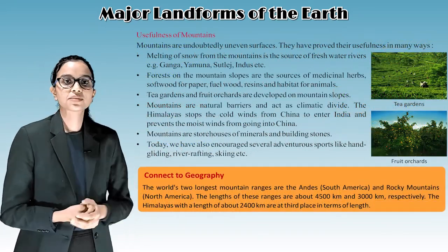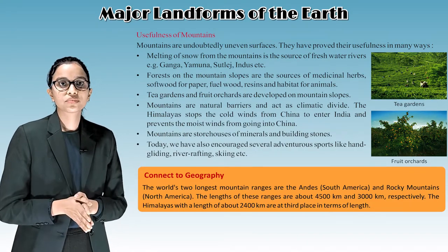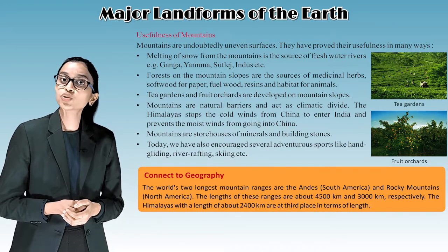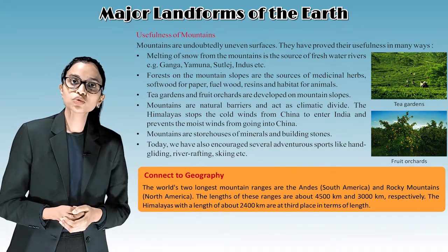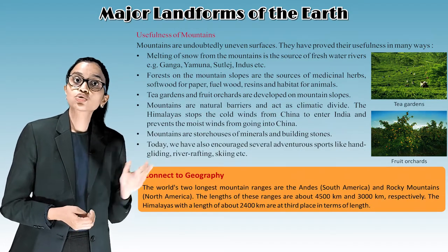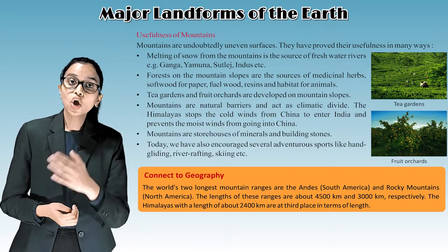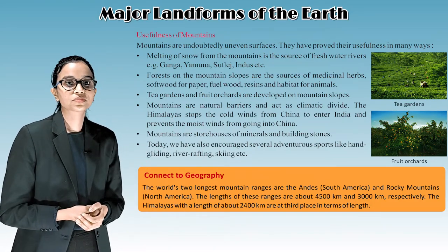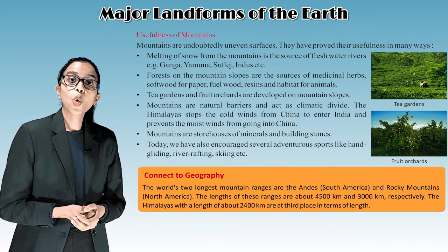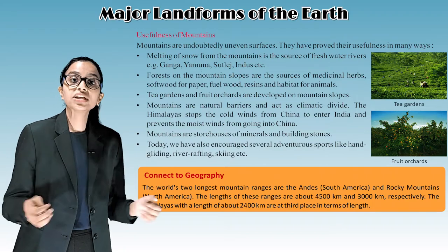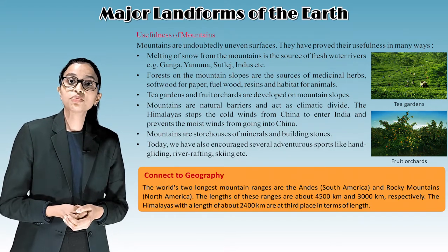Usefulness of mountains: mountains are undoubtedly uneven surfaces, but they have proved their usefulness in many ways. Melting of snow from the mountains is the source of freshwater rivers such as the Ganga, Yamuna, Sutlej, and Indus. Forests on the mountain slopes are sources of medicinal herbs, softwood for paper, fuelwood, resins, and habitat for animals. Tea gardens and fruit orchards are developed on mountain slopes. Mountains are natural barriers and act as climatic divides. The Himalayas stop cold winds from China entering India and prevent moist winds from going into China. Mountains are storehouses of minerals and building stones.